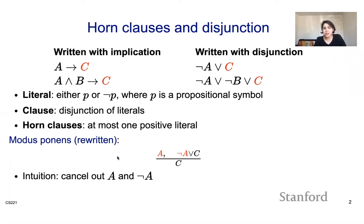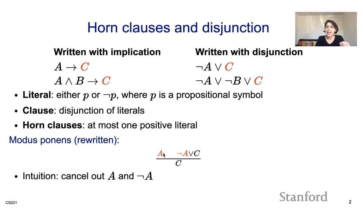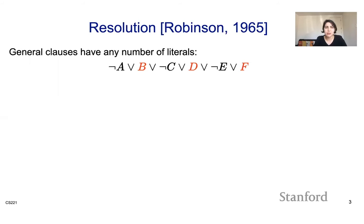When thinking about modus ponens, I can write it out as clauses. I have A and A implies C, and that gets me C — that is what modus ponens tells me. Instead of A implies C, I can write it as a clause: negation of A or C. Intuitively, what is really happening is you're canceling out A and negation of A, that's why you're getting C. This helps us think about the more general resolution rule.